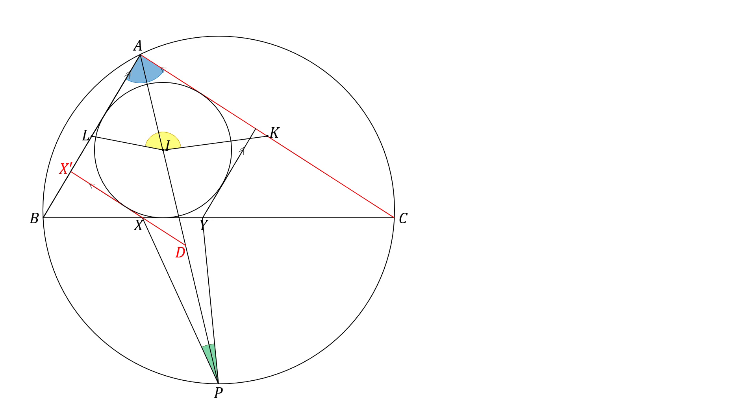Since AC and DX are parallel, and AD crosses both lines, angle CAD and angle ADX are alternate angles and are equal. This is also useful when proving AI is the same length as AD.